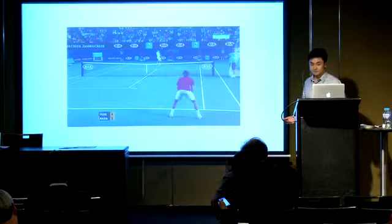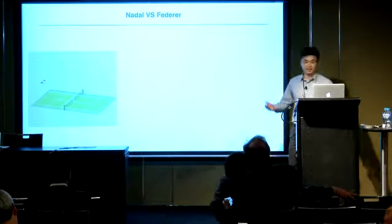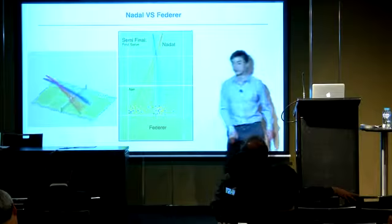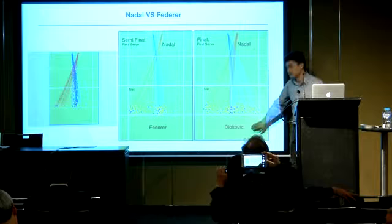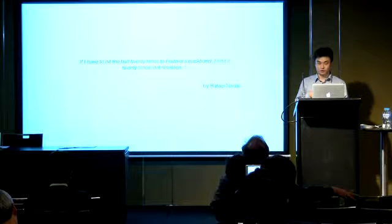If we look at another example, it's again in region one. If we look at all the data from Nadal's serve against Federer in the semifinal of the 2012 Australian Open, you can see almost all the first serves for Nadal are centered at this region, because this is the backhand for Federer. And this is completely different when you look at Nadal against Djokovic — there are more serves towards this other region.